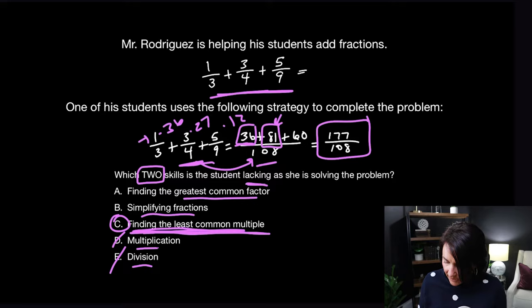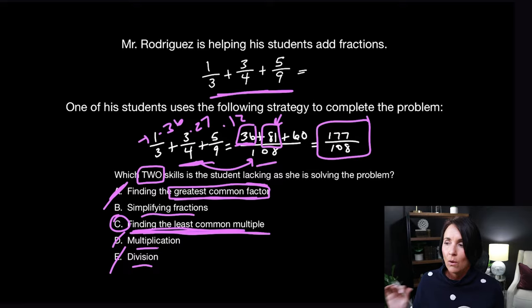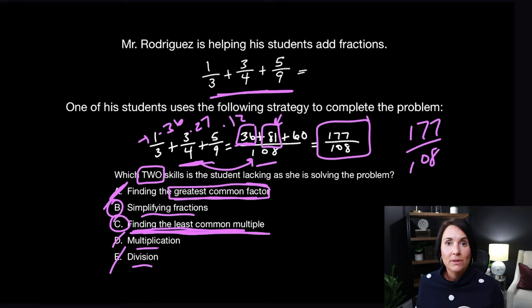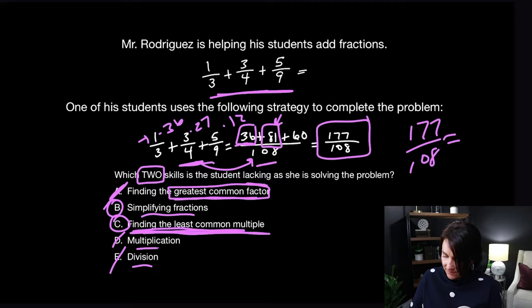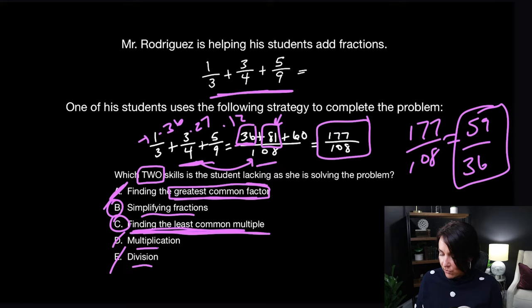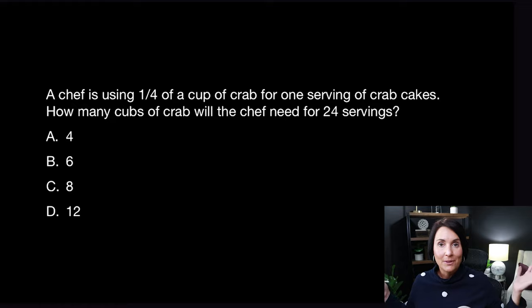That leaves us with simplifying fractions. The student got 177 over 108, which is not fully simplified — 177 divided by three is 59 and 108 divided by three is 36, bringing it down to 59 over 36. So the student failed to simplify and failed to find the least common multiple. The answer is B and C. I did those two problems in two different ways so you could see how they might appear on the test: one where the student did it correctly, and one where you had to find the error.